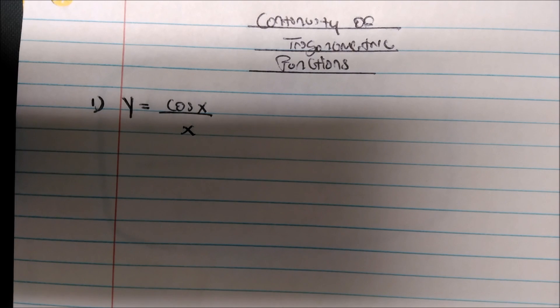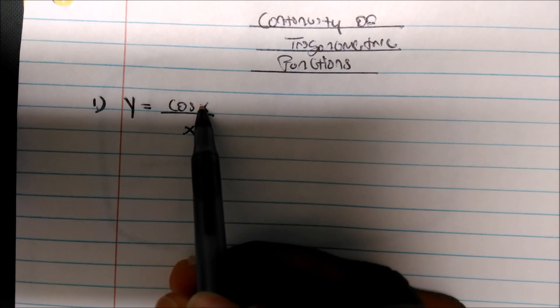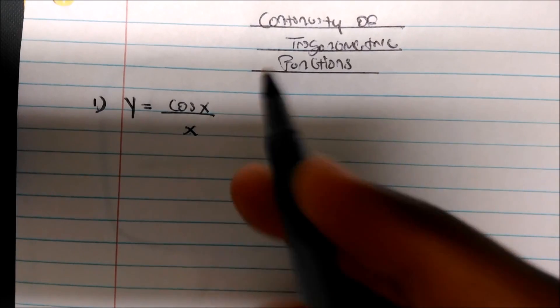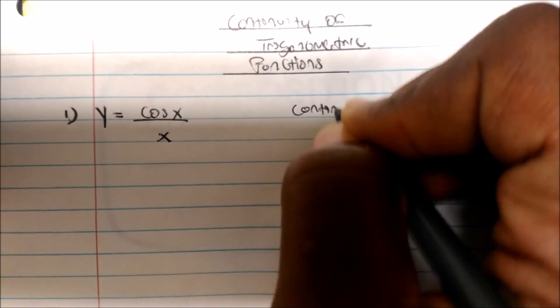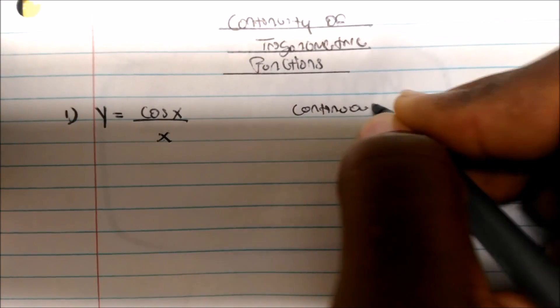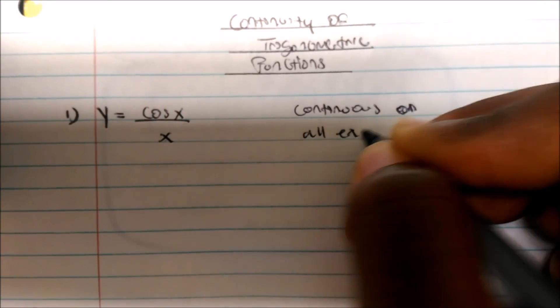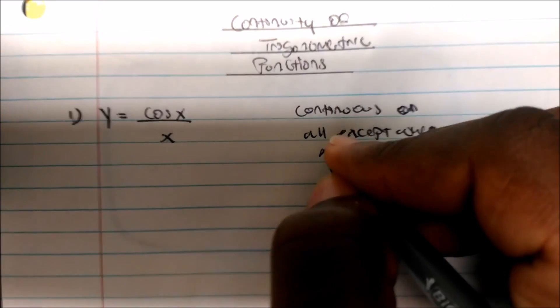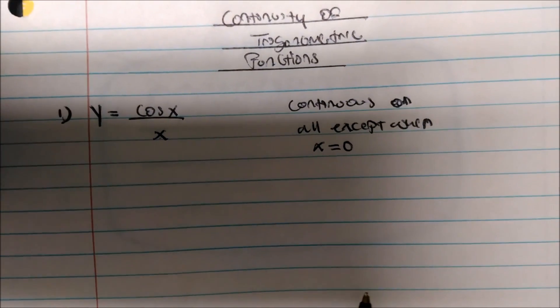To find discontinuity, well, if you plug in zero for x, cosine of zero is one, but we have zero here. So the answer is straightforward. It's going to be continuous on all points except when x is equal to zero, obviously, because you can't divide by zero. So that one is just straightforward.